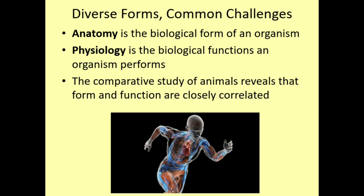For example, the anatomy of your hand would be the bones that make up the skeletal system, the tendons, ligaments, muscles, and nerves — all the things that physically make up the structure of the hand. Then we can look at the physiology of the hand: the biological functions it can perform. The anatomy is what enables the physiology. The structure of the hand enables it to grasp objects, manipulate things, pick things up, use tools, do fine movements, and grip heavy objects. Structure equals function.